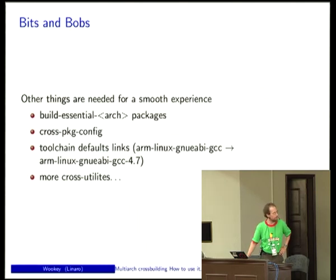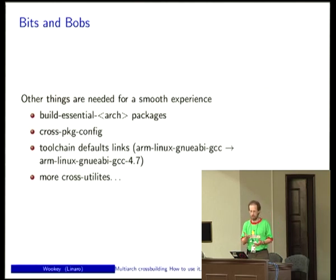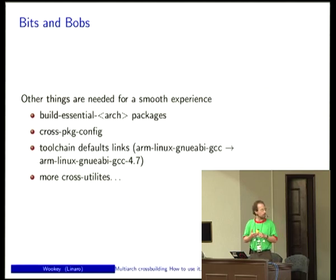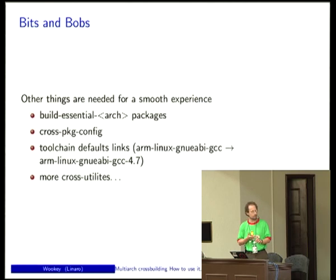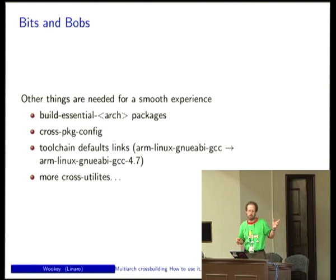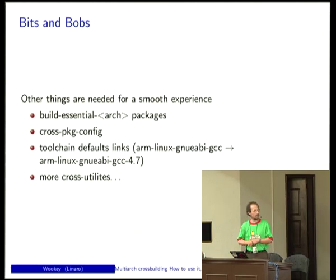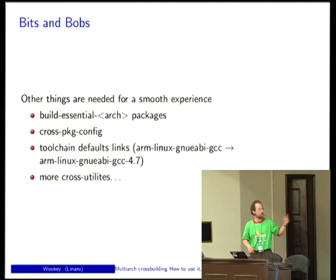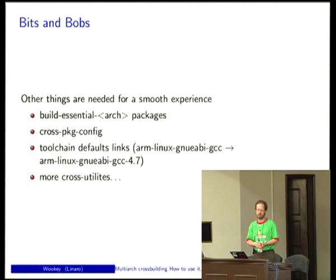We have all the core pieces, but to make this work smoothly within Debian you need extra bits. Just as build-essential ensures you have a compiler, make, and basic tools, we need the same concept for cross-building — ensuring you have a cross-compiler for the target architecture, a cross libc, cross libc++, cross pkg-config, and so on. sbuild now installs build-essential-ARCH and expects that to be present, to gloss over differences between distros.